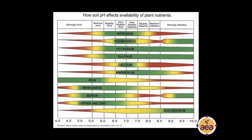We are all familiar with the nutrient availability according to pH chart — 'How soil pH affects availability of plant nutrients.' If you do a quick Google search, you will find hundreds of diagrams similar to this one. For this presentation, I'm going to focus just on the chemistry perspective and describe why looking at pH only from a chemistry perspective is incomplete.